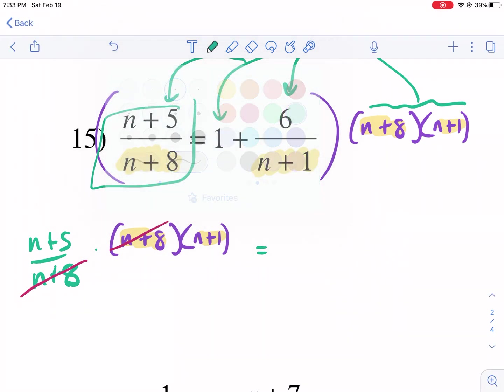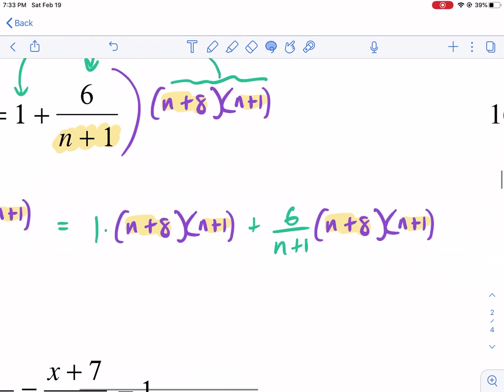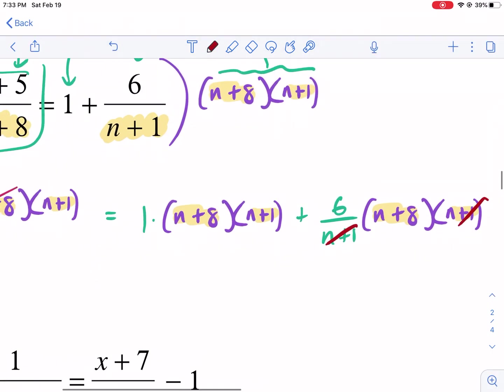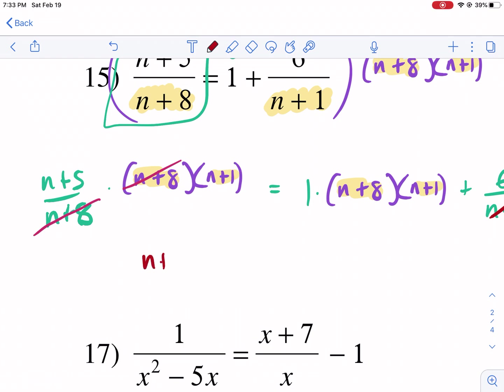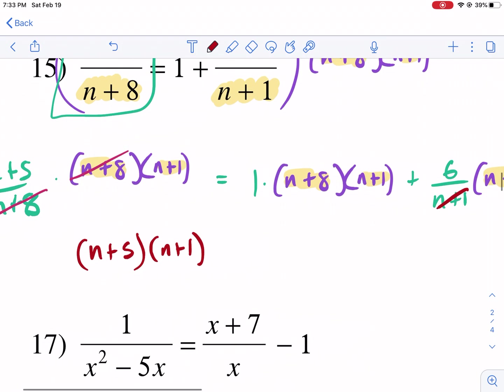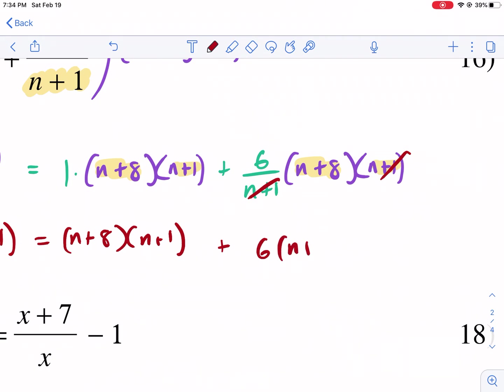Let's do this in green. I have 1 and I need to multiply this by the same thing too, because we're multiplying by each term. And lastly, I have plus 6/(n+1) that also gets multiplied. Copy paste feature came in handy. This middle one times 1 just stays as that. But this one, we're going to have some canceling. After simplification, we have (n+5)(n+1) equals (n+8)(n+1) plus 6(n+8). That's it.